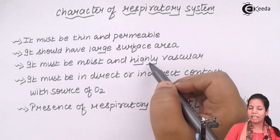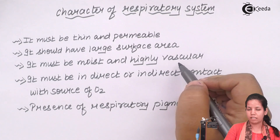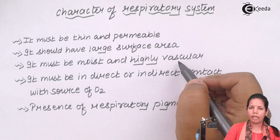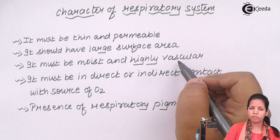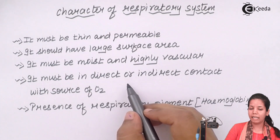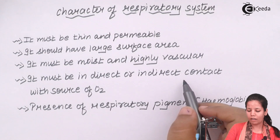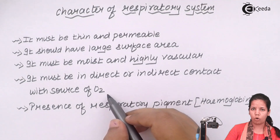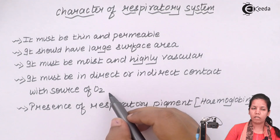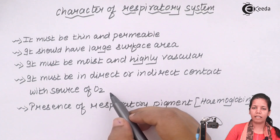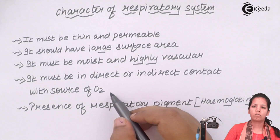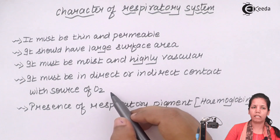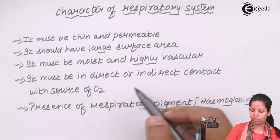Also, it needs to be moist and highly vascular. In prokaryotes or in vertebrate organisms, this is a requirement which is very necessary. They must be in direct or indirect contact with the source of oxygen. Wherever you're breathing or inspiring that air, it needs to have the presence of oxygen, because that's the thing for which you're breathing — the vital energy molecule.